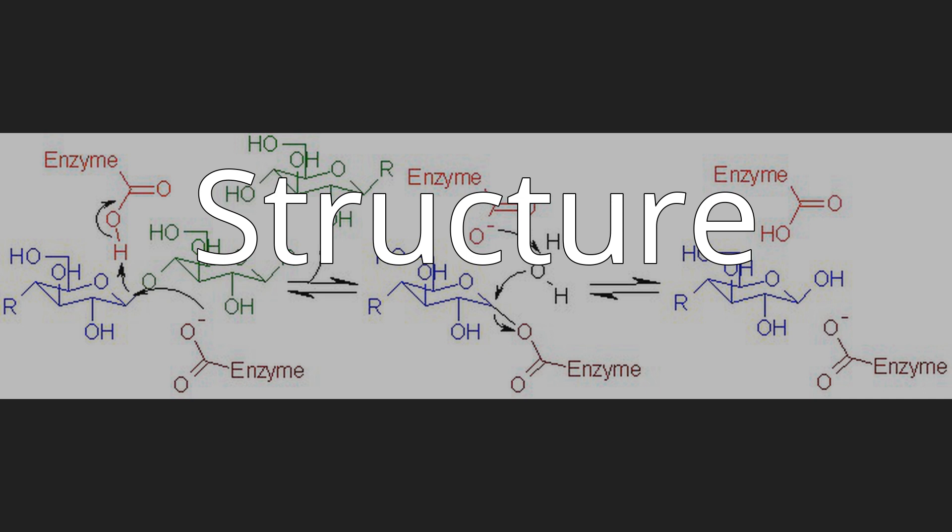Different species in the same family as T. maritima make cellulases with different structures. Cellulases produced by the species Coprinopsis cinerea consist of seven protein strands in the shape of an enclosed tunnel called a beta/alpha barrel. These enzymes hydrolyze the substrate carboxymethyl cellulose. Binding of the substrate in the active site induces a change in conformation which allows degradation of the molecule.